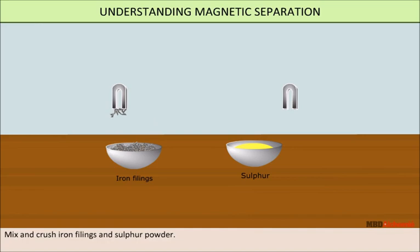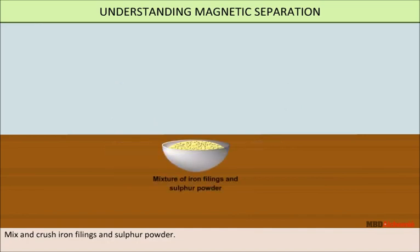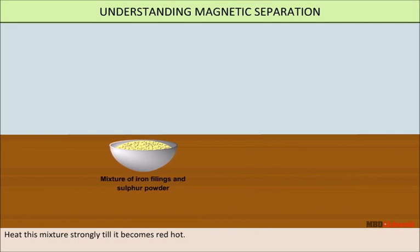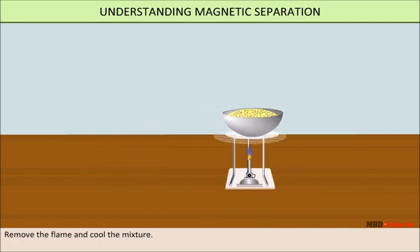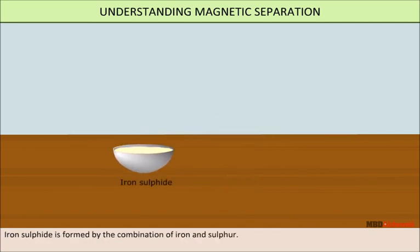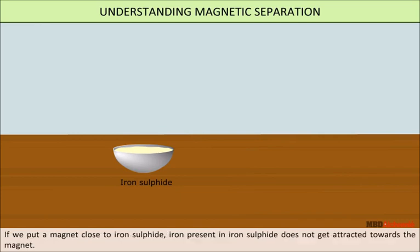Mix and crush iron filings and sulfur powder together. Heat this mixture strongly until red hot, then remove the flame and cool the mixture. Iron sulfide is formed by the combination of iron and sulfur. If we put a magnet close to the pieces of iron sulfide, the iron present in iron sulfide does not get attracted towards the magnet.